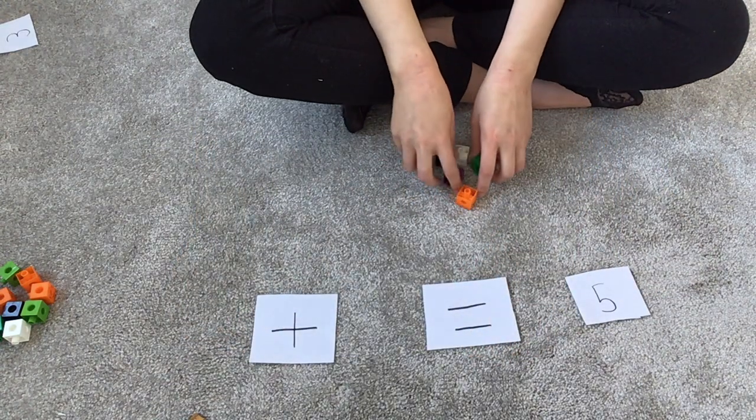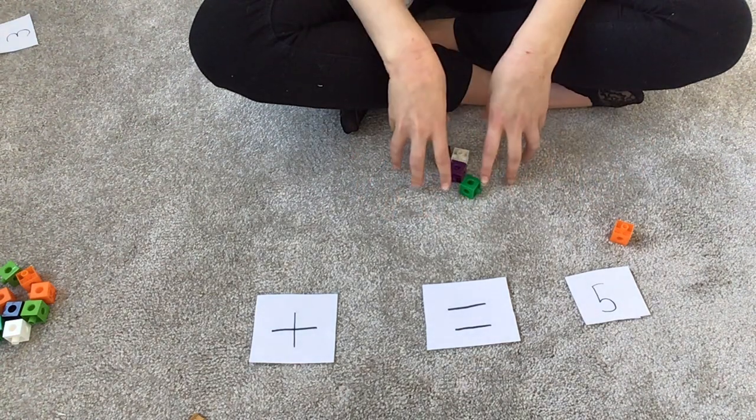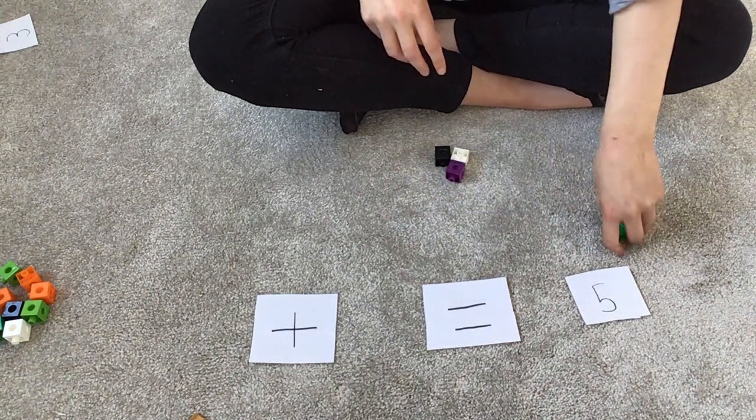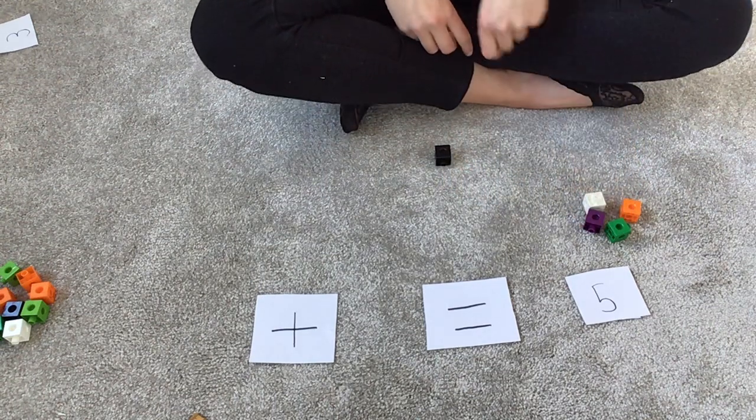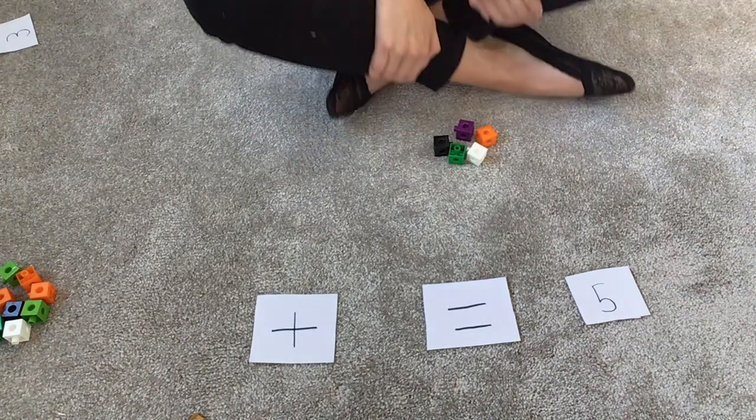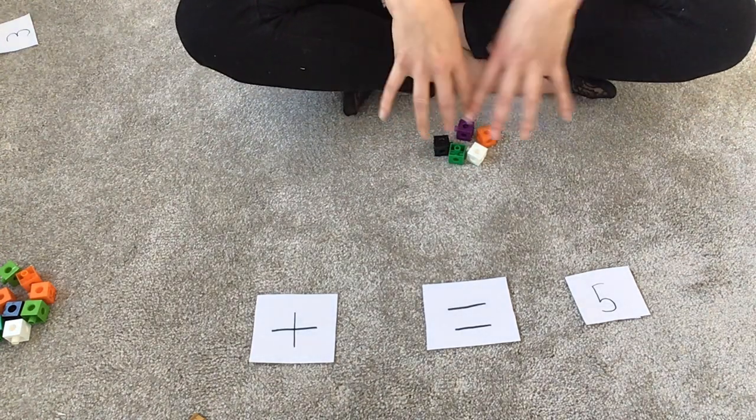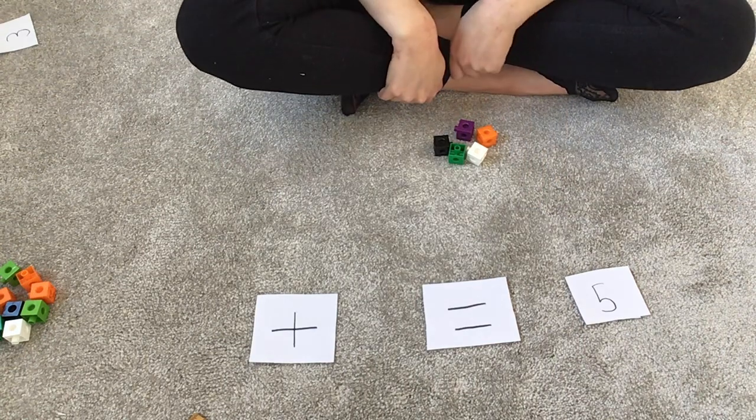How we're going to do it is you are going to take a cube away and then do that number sentence. Then again, you'll take two away, then you'll take three away, then you'll take four away. Let's do the first one together because it's nice and easy.